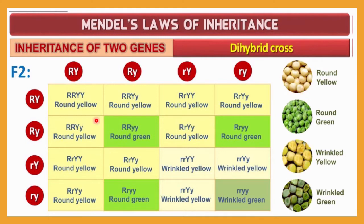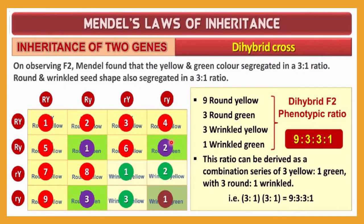In the F2 generation, four types of phenotypes are obtained. Mendel found that the yellow and green colors segregated in a 3:1 ratio, and similarly round and wrinkled shapes also segregated in a 3:1 ratio. Counting from the Punnett square: round yellow seeds are 9, round green seeds are 3, wrinkled yellow seeds are 3, and wrinkled green seeds are 1.